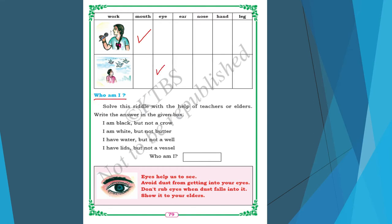Now kids, we have some riddles. Here is the first one: I am black but not a crow. I am white but not butter. I have water but not a well. I have lids but not a vessel. Who am I? The diagram is given — it is the eye.